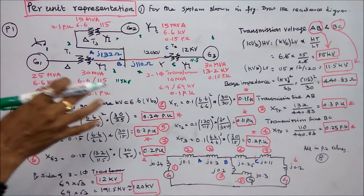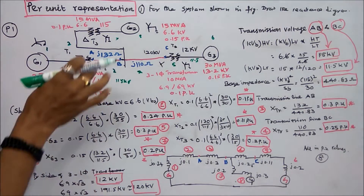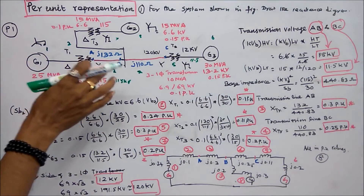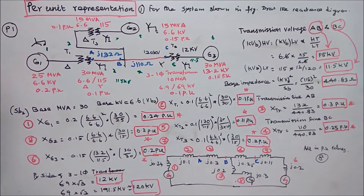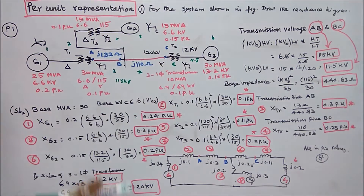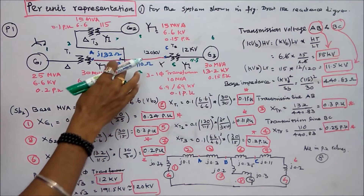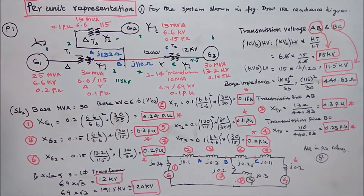The third component is transmission line AB. Its reactance is j132 ohms. The fourth is transmission line BC. Its reactance is j110 ohms.